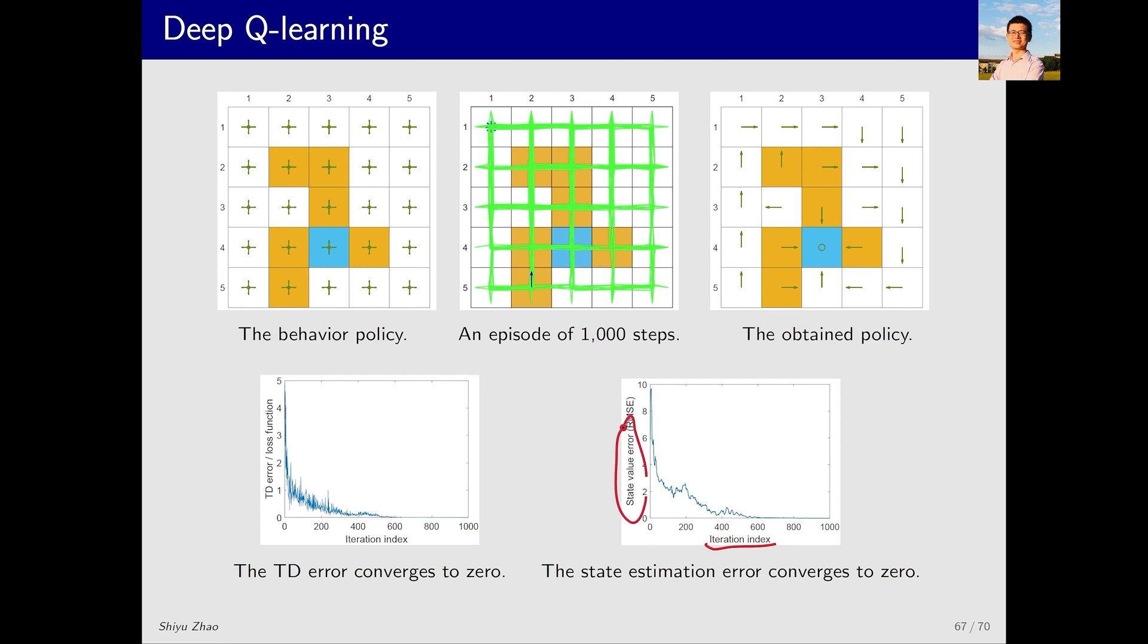So what's the point I want to make with this example? That is, we can achieve the same results with a very small amount of data. Why is that? First, it's because value function methods inherently have strong generalization capabilities, as I have explained before. Second, we're also using experience replay here, which allows experiences to be reused efficiently.